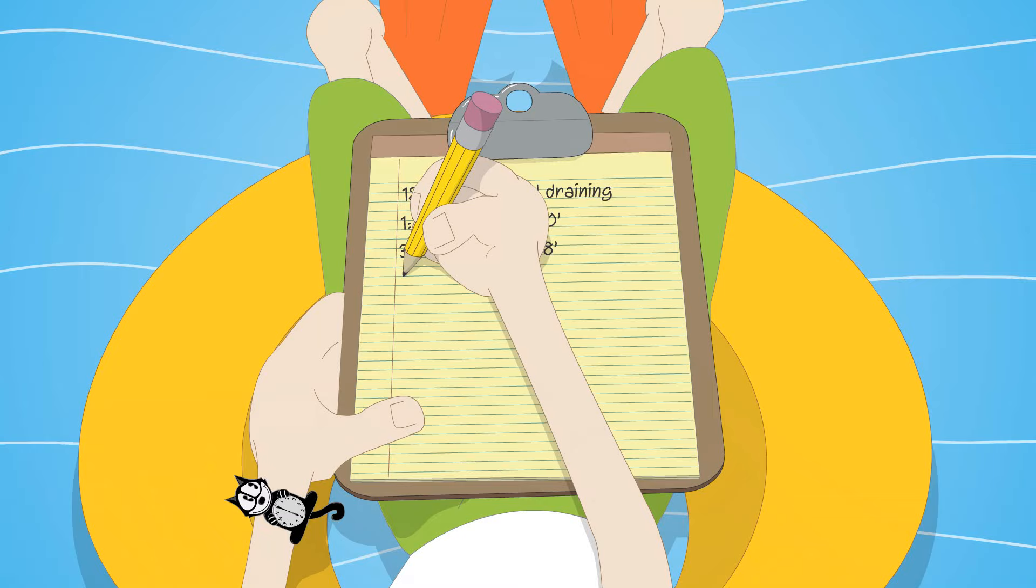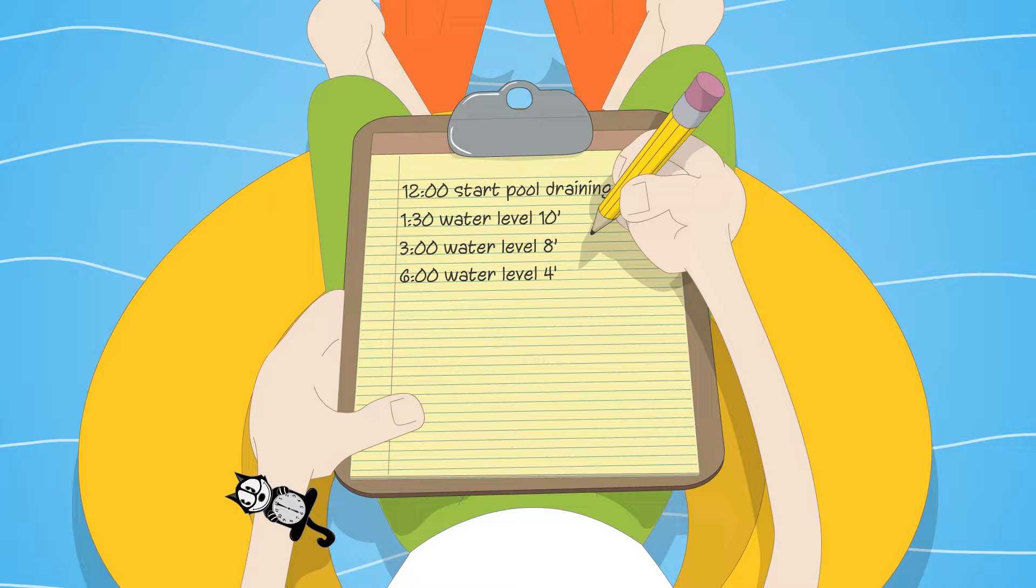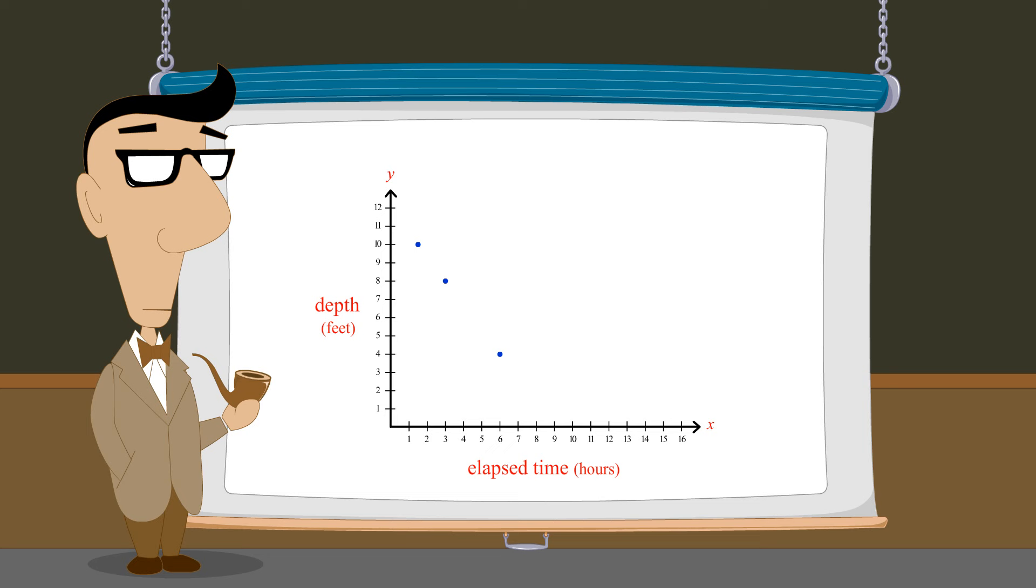Dang, it's 6 o'clock already. And we still have 4 feet to go. We can now add a third data point to our graph of water depth versus elapsed time since AV has determined that after 6 hours, the water depth is 4 feet. It looks like these three points all fall on a line. So maybe the function we are graphing is linear.